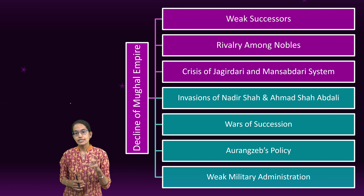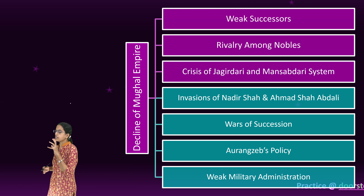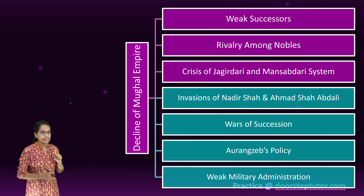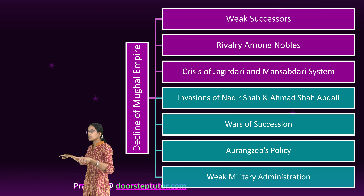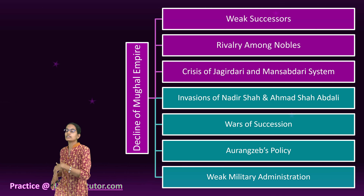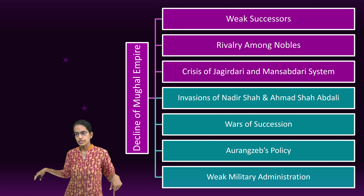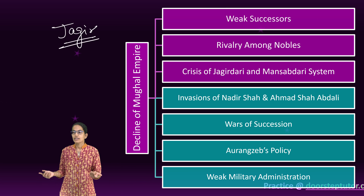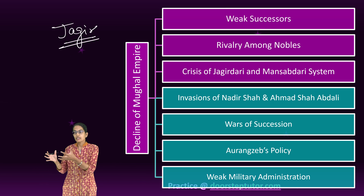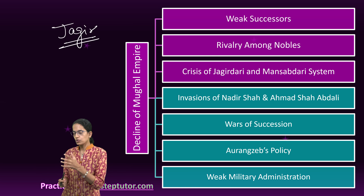The third and very important factor was the crisis of the Jagirdari and Mansabdari systems. The officers were not given salaries; instead, they were given parcels of land called Jagir to maintain their troops and household expenses. Over the years, there was a crisis in the quality of Jagirs — the land was in paucity and therefore this system could not persist long.